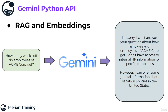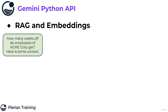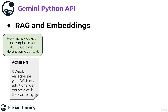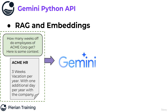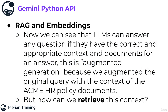How can I actually improve on this by augmenting what I'm providing to Gemini? Well, the whole idea behind augmented generation is that not only do you have your original query — like how many weeks off do employees of Acme Core get — I'm also going to provide some additional context. I'm going to augment my actual query with whatever content is relevant. So in this case, it'd be great if I could pull the documents from the HR department at Acme that happen to relate to vacation policy. If I take all of this together and feed that into Gemini, then it will be able to understand the context. This is basically just one large string of text to Gemini, and it'll say something like, according to the HR vacation policy documents, employees receive three weeks of vacation per year with one additional day per year of service at the company. So large language models can answer pretty much any question as long as they have the correct and appropriate context and documents that relate to the answer. This is the augmented generation part — we augmented the original query with the context of the Acme HR policy documents.